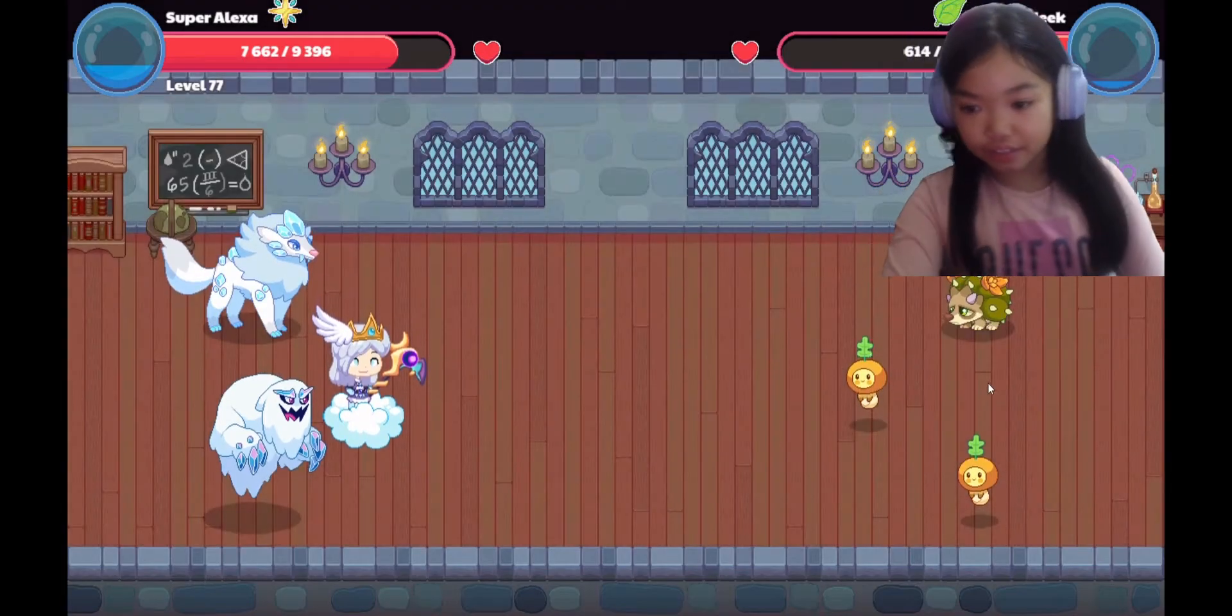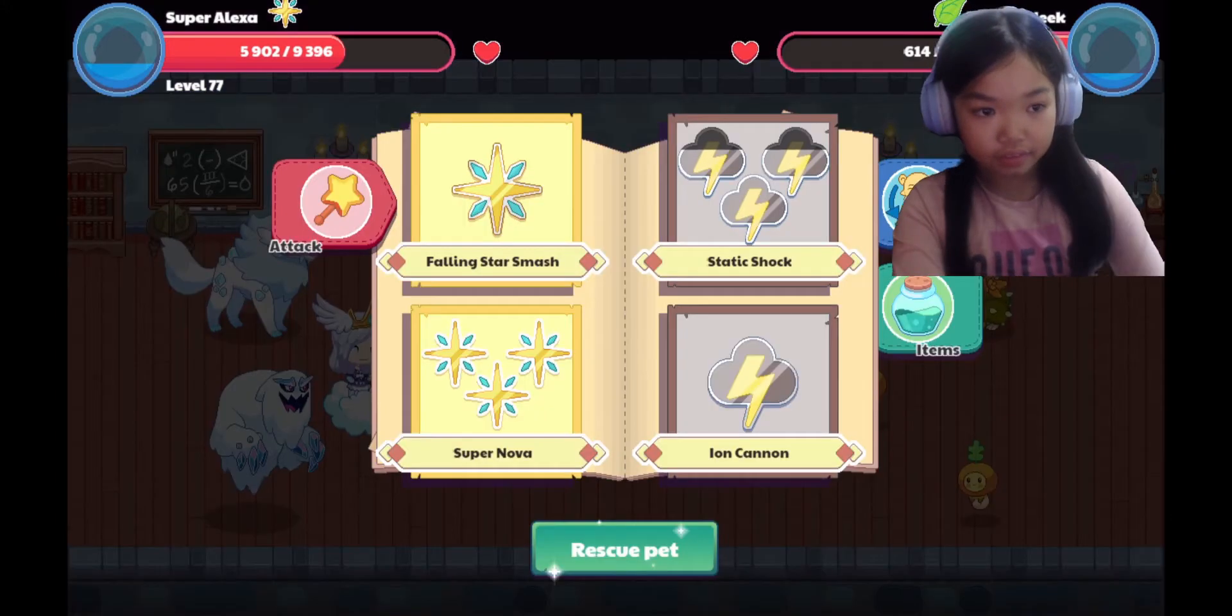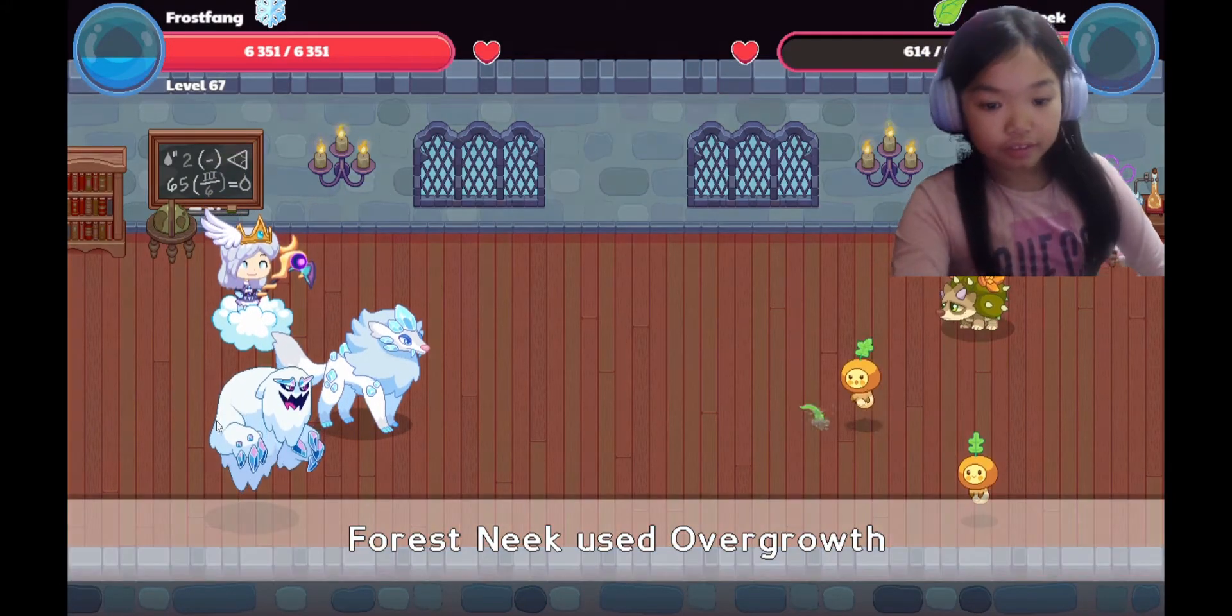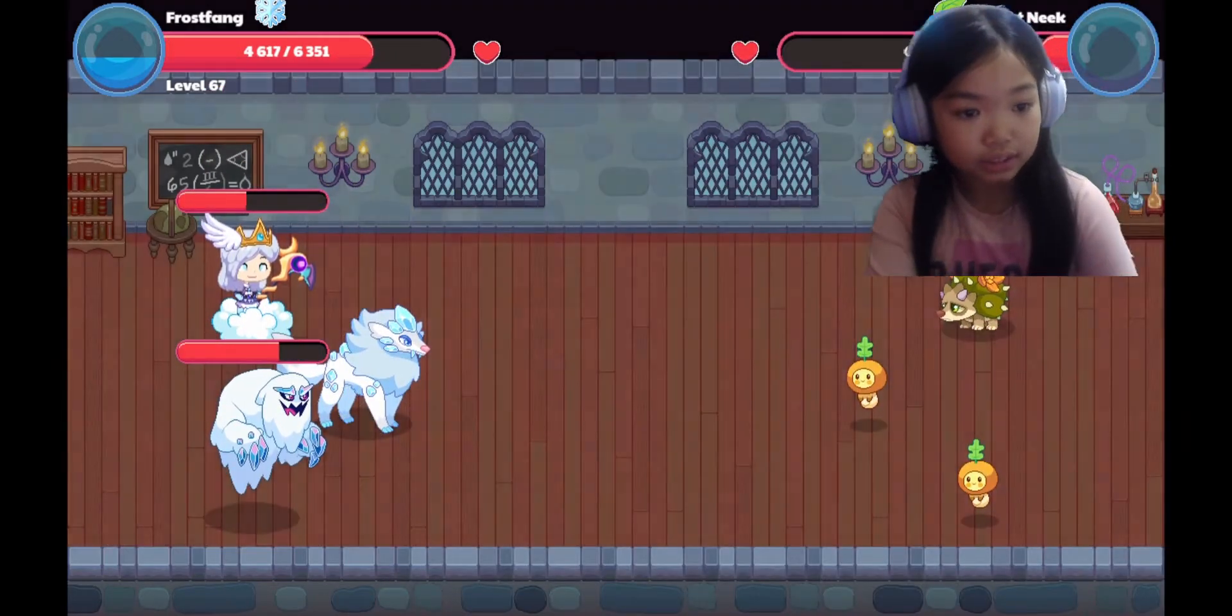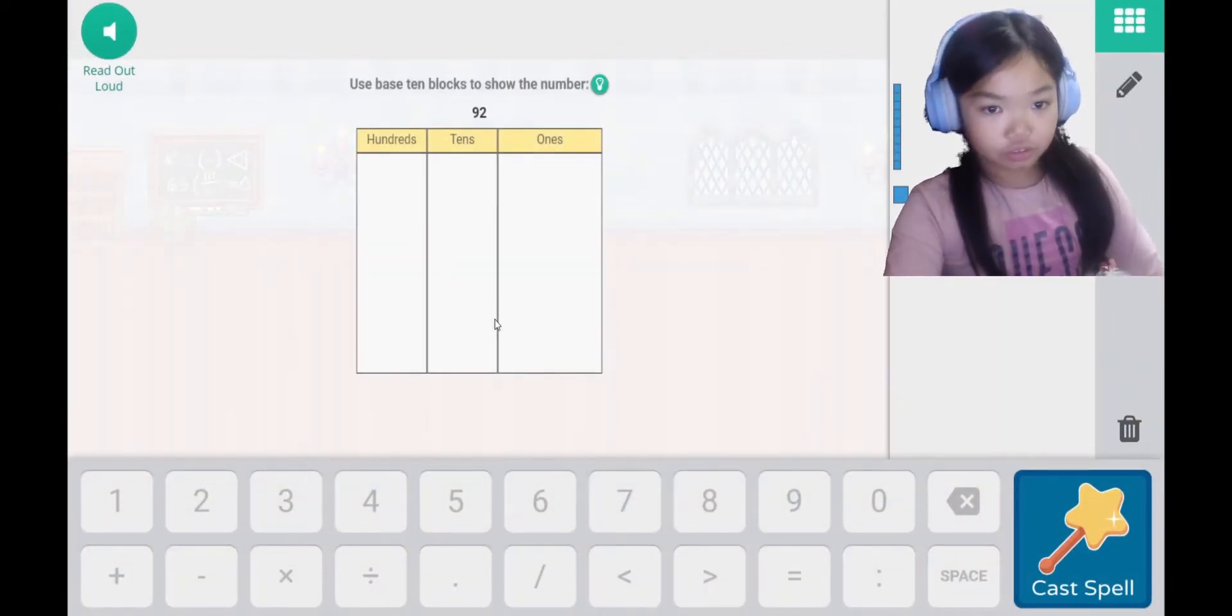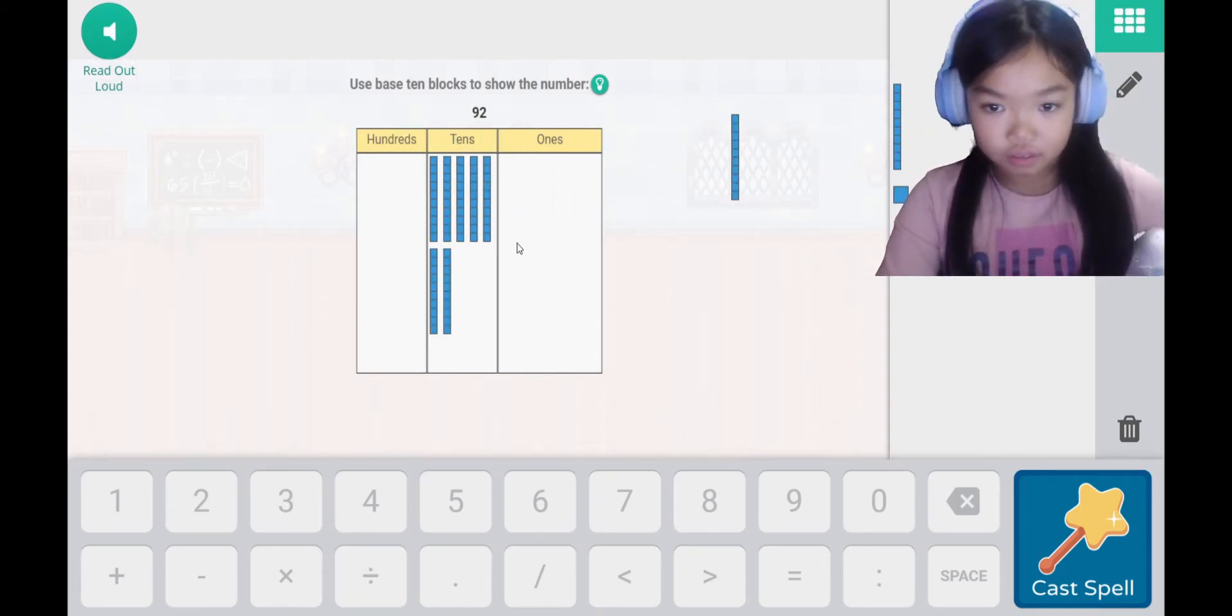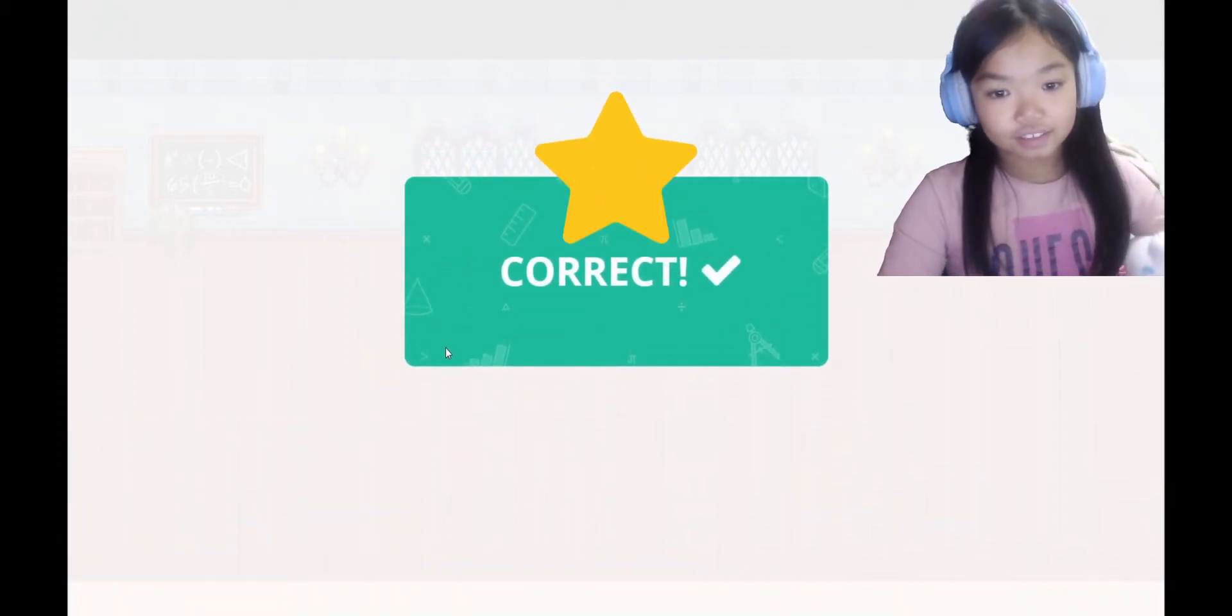Good thing I'm still alive. Let's see. Use base 10 blocks to show the number 92. So I have 5 tens, 6, 7, 8, 9. Let's do it. 1, 2. Correct.